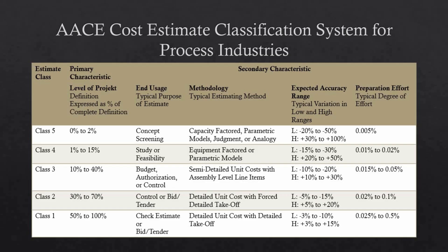A Class 5 cost estimate is conducted in the very early stages during concept screening, whereas a Class 1 cost estimate is performed at the almost final design stage. Classes 5 and 4 rely on rough estimation methods, whereas Classes 3, 2, and 1 use detailed approaches. Class 5 estimates have a wide accuracy range while Class 1 estimates fall within a narrow range. The lower the class number, the higher the estimate accuracy. More detailed estimates require greater effort; Class 5 demands minimal effort whereas Class 1 involves significant work.